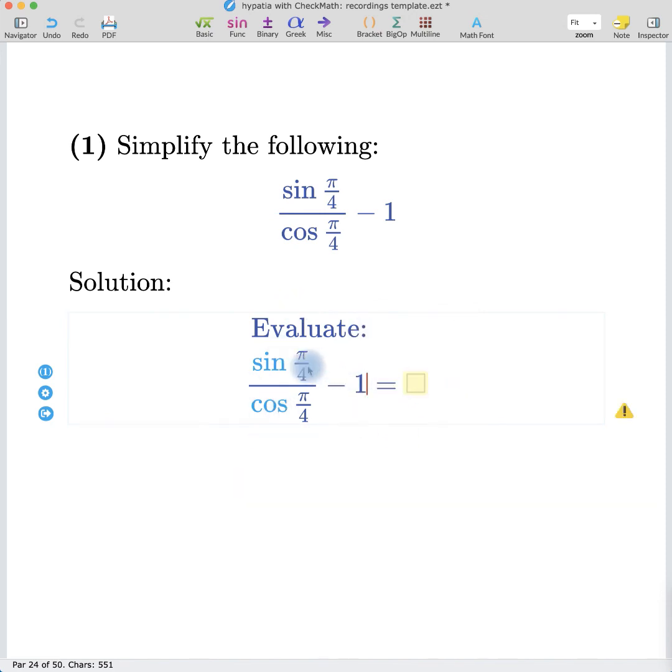So to simplify this, we can see that the sine and cosine both have the same arguments. And so sine of pi over 4 over cosine of pi over 4 is equal to tangent of pi over 4. Tangent of pi over 4 is equal to 1. 1 minus 1 will be 0. But let's make sure that check math works. So for example, let's say that we evaluated this to be 1.